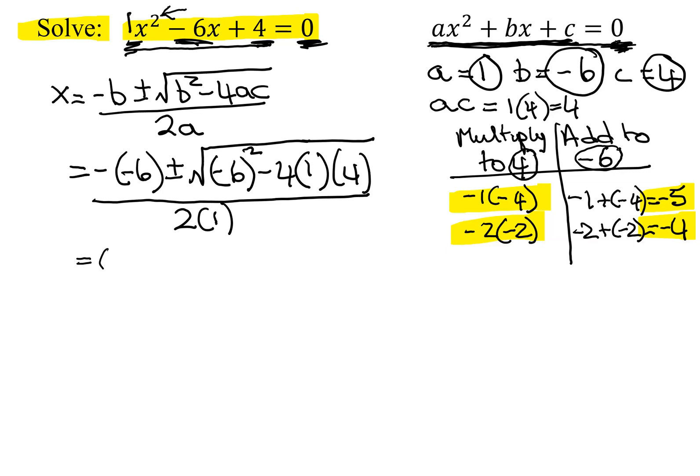Now all we have to do is simplify this. The opposite of negative 6 is positive 6, plus or minus the square root of negative 6, all squared is negative 6 times negative 6, so it's positive 36, minus 4 times 1 is 4, times 4 is 16, all divided by 2 times 1 is 2. So this is going to give me 6 plus or minus the square root of 36 minus 16 is 20, all divided by 2.